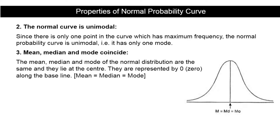The third property is that the mean, median, and mode of the normal curve coincide. All three measures of the normal distribution are the same and lie at the center, represented by zero along the baseline. Therefore: mean = median = mode.